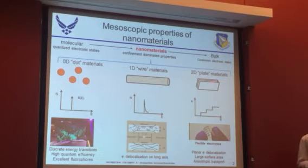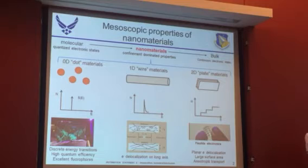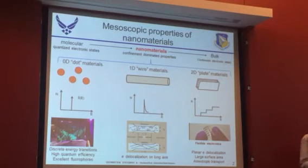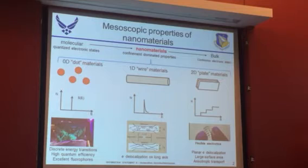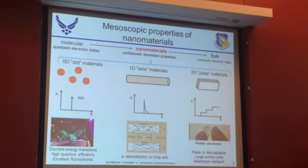Getting to the meat of the talk: 2-D plate-like materials have planar electron delocalization, with a large surface area over which electrons can be delocalized. This gives interesting opportunities for anisotropic transport of electrons, connectivity, and thermal transport. We've been looking at these materials in flexible electronics.